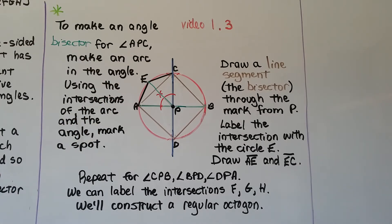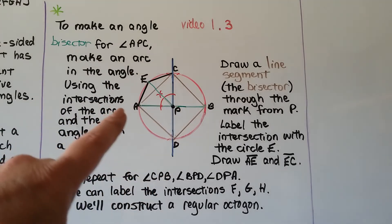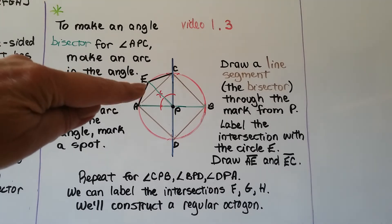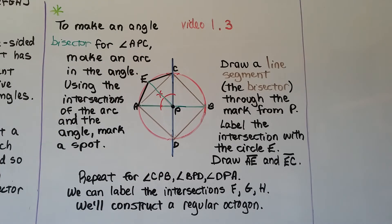We do that for each angle—we can do it for CPB, BPD, and DPA. We make these little segments here and repeat it, and we'll construct a regular octagon.